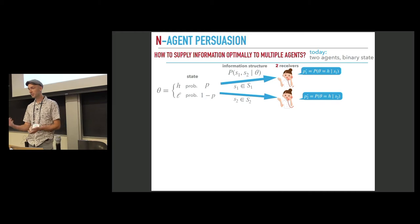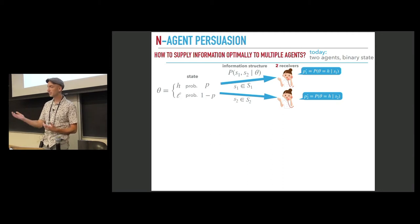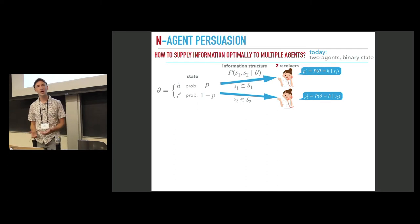Each of them observes a private signal about the state. For the first receiver, it is S1 from her set of signals as capital 1. For the second receiver, it is S2 from her set of signals as capital 2.